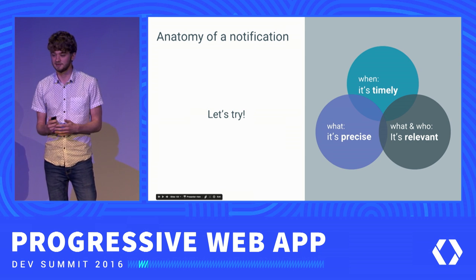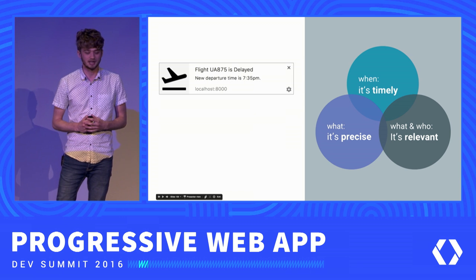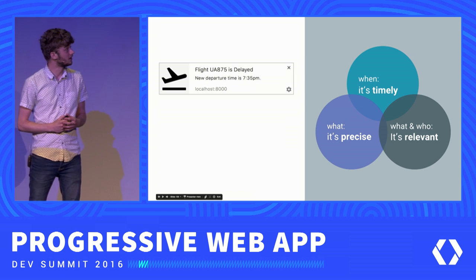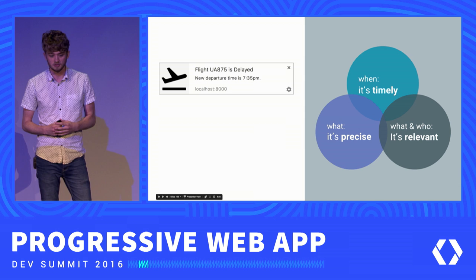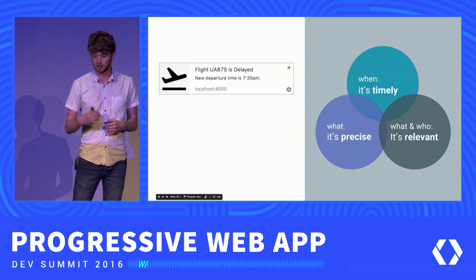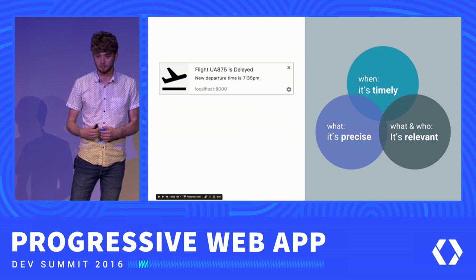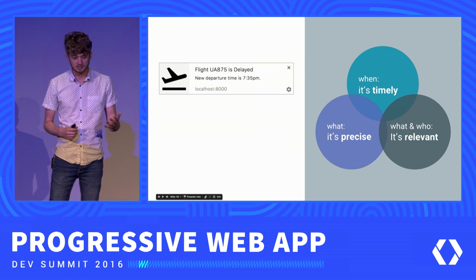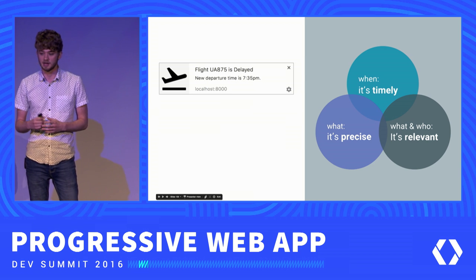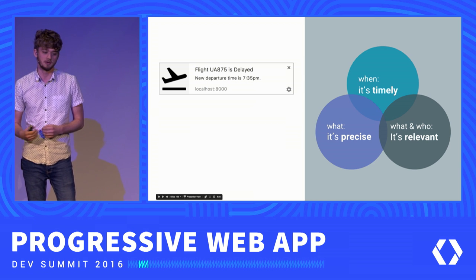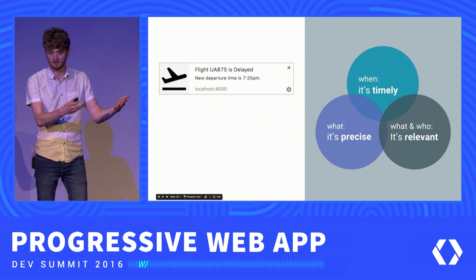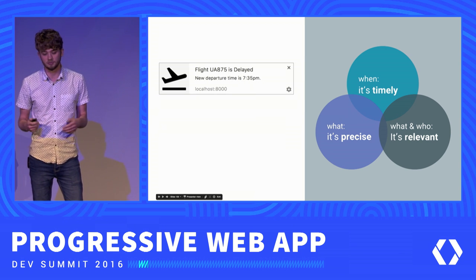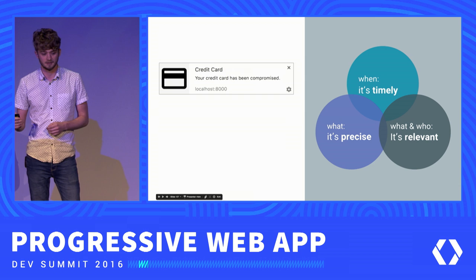Let's give this a go. Here's one example notification. I think this is pretty good — it's timely, I'm probably at the airport about to get on a plane; it's precise, telling me my flight number and when the flight has been rescheduled to; and it's relevant, it's my flight. So I think that's great.